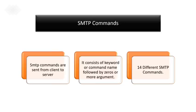SMTP commands are sent from the client to the server. Each command consists of a keyword or a command followed by zero or more arguments. Some keywords do not contain any arguments. The format of the command is: keyword colon argument(s). There are 14 different SMTP commands available.